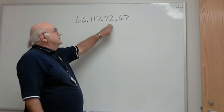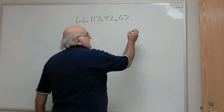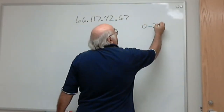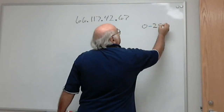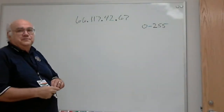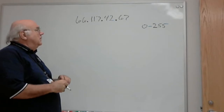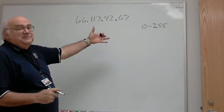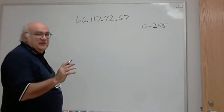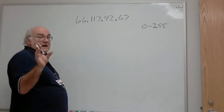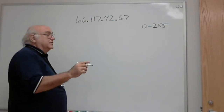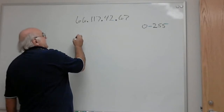Each one of these decimal numbers can be anywhere from 0 to 255. That's as big as we can go. Now why is that as big as we can go? That is as big as we can go because each one of these numbers can be represented in binary — which, remember, is how the computers think — as eight digits.